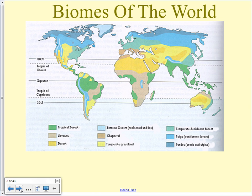Here are our biomes of the world and where they're generally located. We're going to start with tropical rainforests — you can see here in the deep green color, obviously much of South America: Brazil, Colombia, Venezuela, places like that. Tropical rainforests are pretty much located right on or next to the equator, because that's where they're going to get the most direct sunlight.